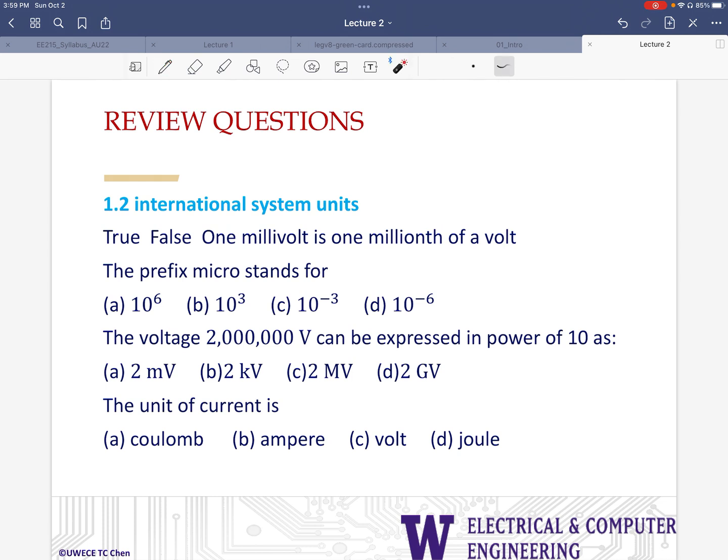The first question is true or false: one millivolt is the same as one millionth of a volt? Well, right away I know that the answer is going to be false. The reason is one millivolt is 10 to the negative three, so that's one thousandth of a volt, which is not the same thing as one millionth of a volt because that is going to be one microvolt. So that's false.